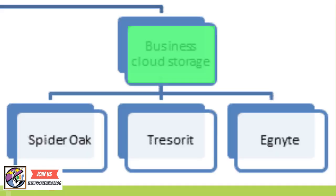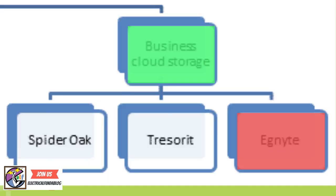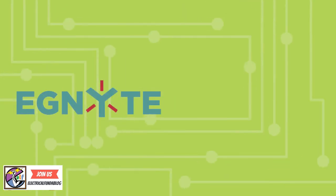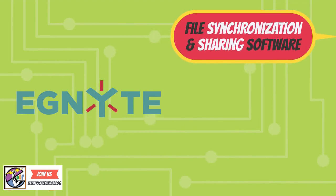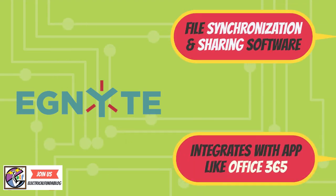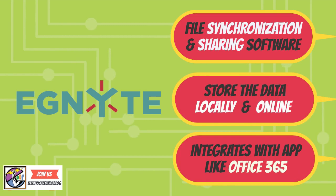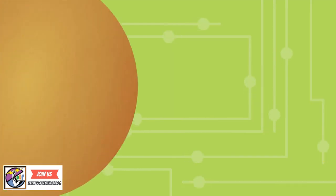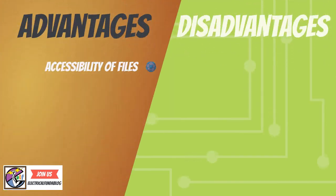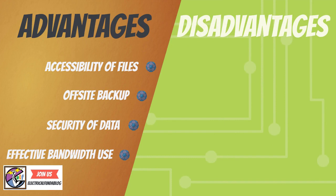Ignite provides software for enterprise file synchronization and sharing. It integrates with applications such as Office 365 and allows businesses to store their data both locally and online, enabling both remote and internal employees to access files. We can also see some of the advantages and disadvantages of cloud storage.